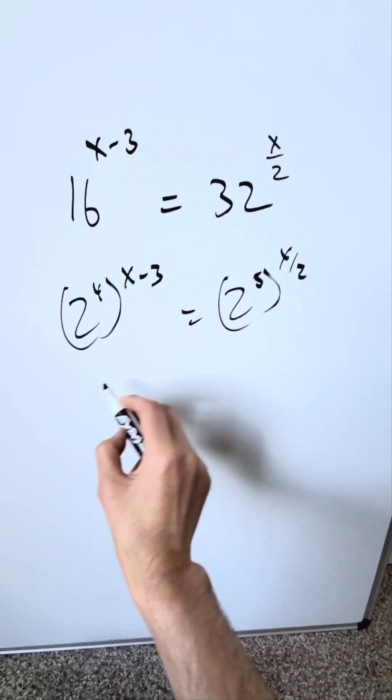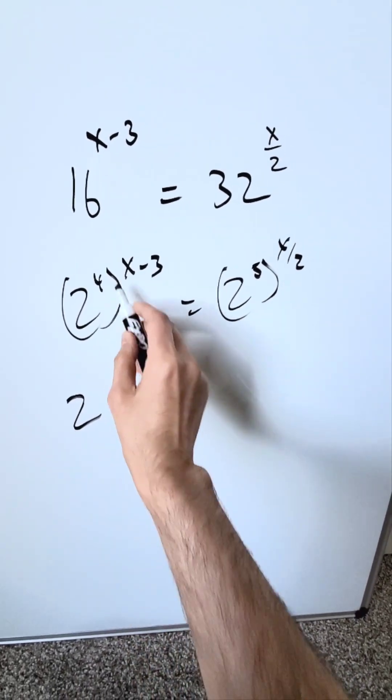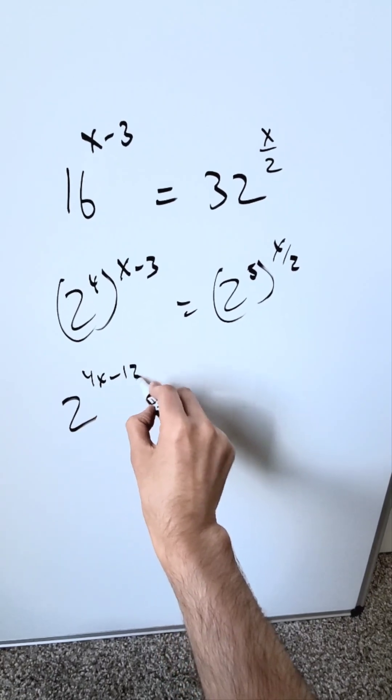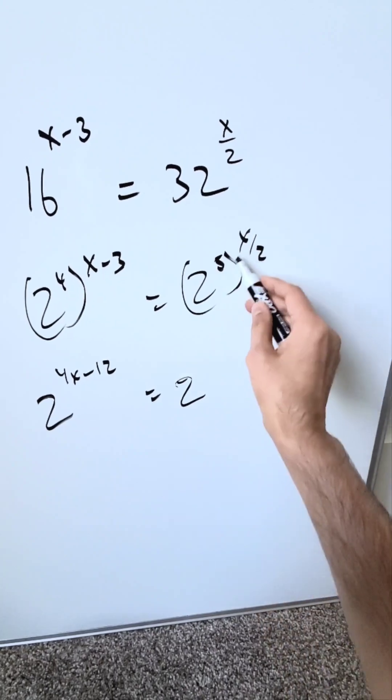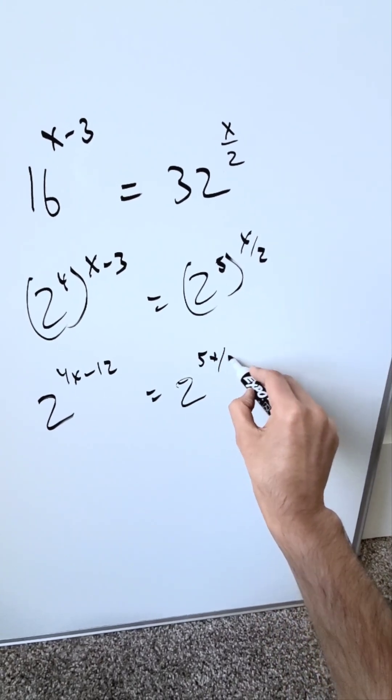You just multiply these exponents. I have here base 2 to the power of 4x minus 12. 4 times x minus 3 is 4x minus 12, is equal to 2 to the power of 5x over 2.